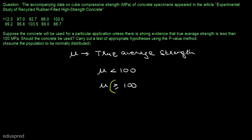Because this claim has an equal to sign, this is the null hypothesis, and consequently, this is the alternate hypothesis. Note that it is a common practice in statistics to replace the greater than or equal to sign in the null hypothesis with equal to sign. So we can write that the null hypothesis is mu equal to 100.